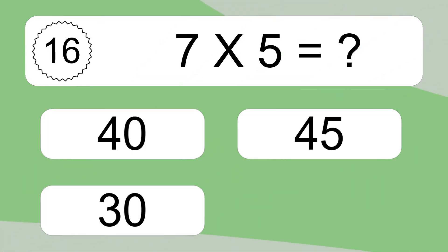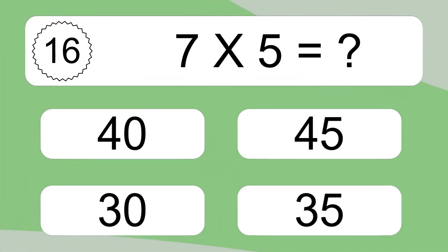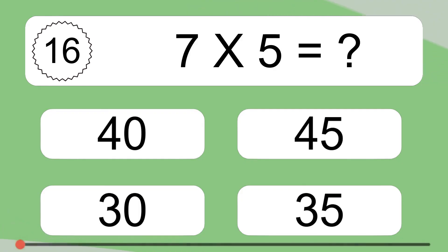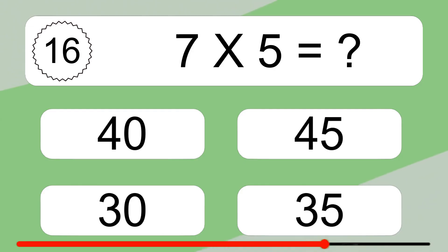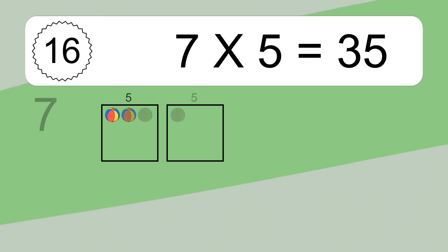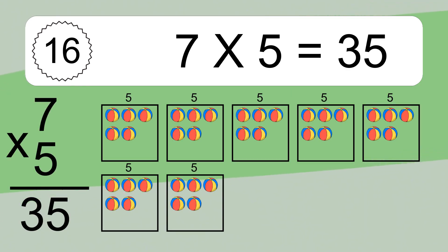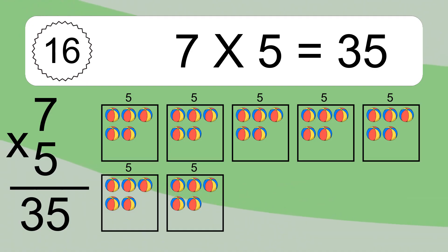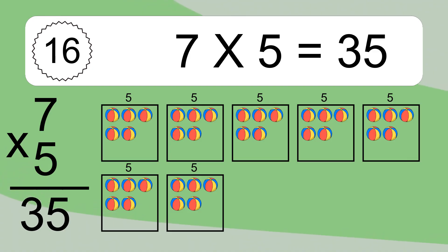7 times 5 equals what? 7 times 5 equals 35. We have 7 boxes, and each box has 5 colorful balls inside. If you count all the balls in all the boxes together, you will have 7 times 5 balls. This equals 35 balls.